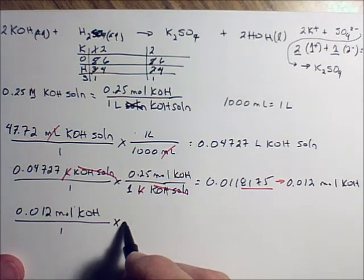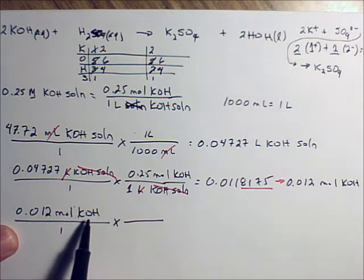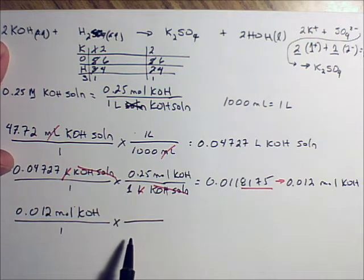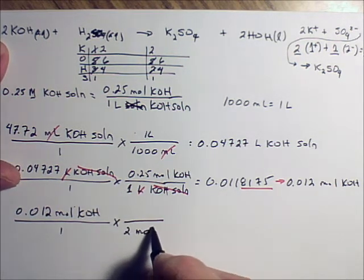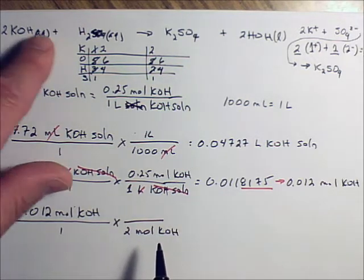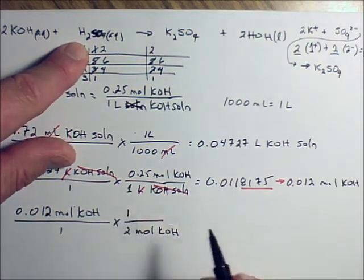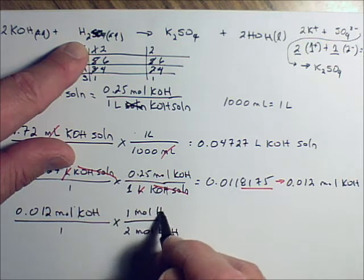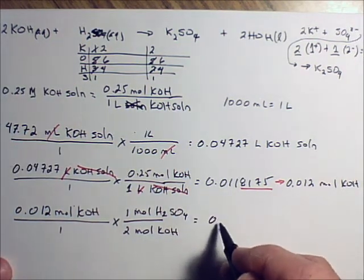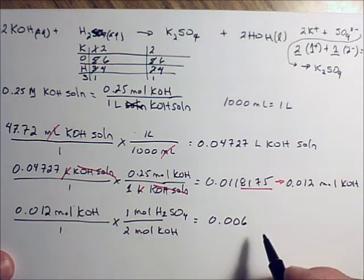Now from the balanced equation, I can write this molar ratio. I want to put moles of KOH on the bottom. And up here, I've got two moles in the equation, two moles of KOH in the equation. And we're trying to find the concentration of the acid. That's this. So I want to put that on the top. And we've got one of those, one mole of H2SO4.